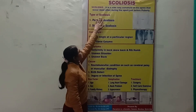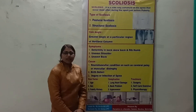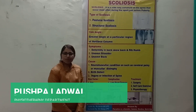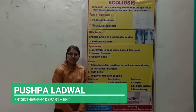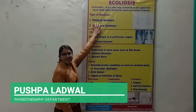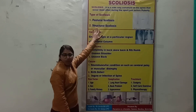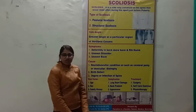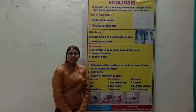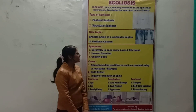Let's come to the types of scoliosis. Basically, there are two types of scoliosis. First is postural scoliosis and second is structural scoliosis. Structural scoliosis is the most important type of scoliosis.